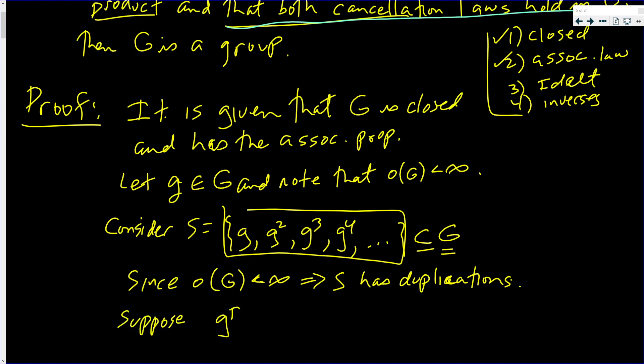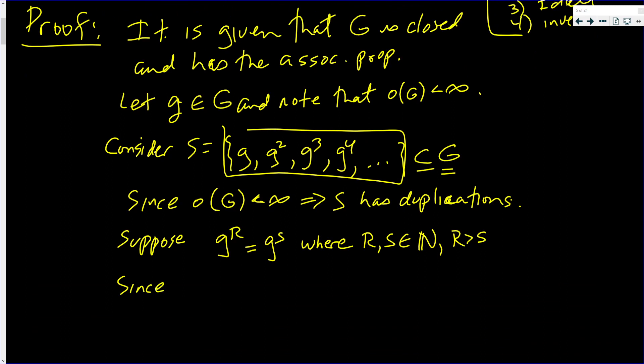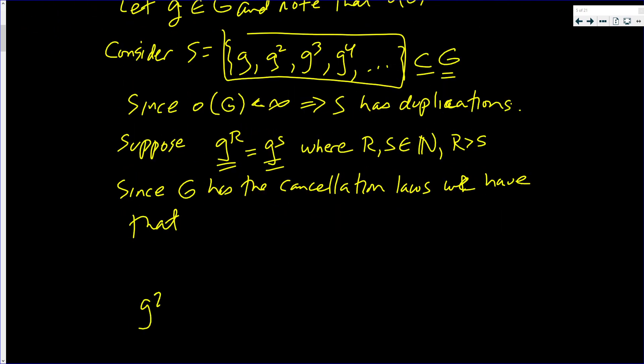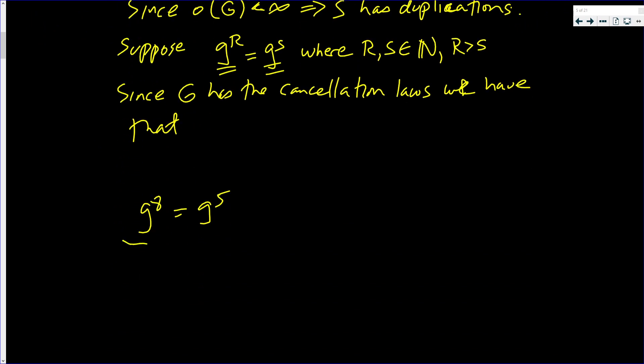Suppose g to the R equals g to the S, where R and S are natural numbers, and say R is bigger than S. Since G has the cancellation laws, we have that, now on both sides, I'm going to kill off g to the S. For example, if it's g to the 8 equals g to the 5, this here means that I'm composing g by itself 8 times, and over here I'm composing g by itself 5 times. And I cross off 5 from each side, and I get g cubed equals the identity element.